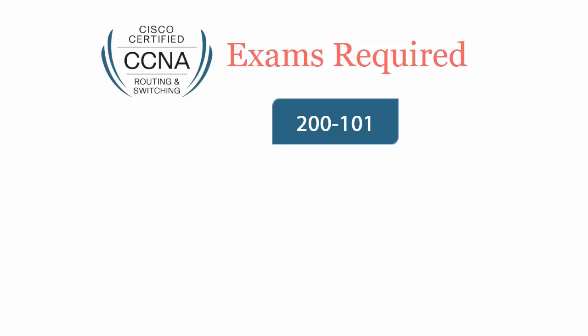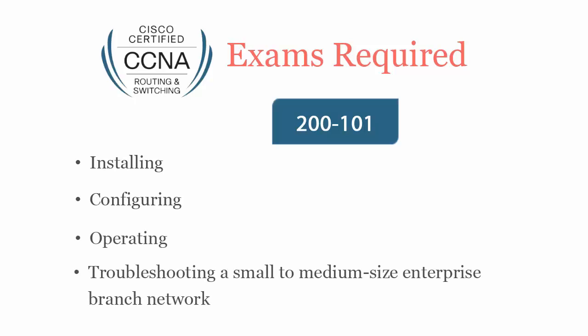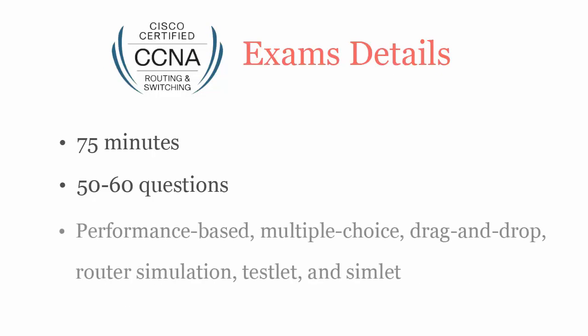Cisco ICND2-200101 exam covers installing, configuring, operating, and troubleshooting a small to medium-sized enterprise branch network. In 75 minutes, you have to complete 50-60 performance-based multiple-choice, drag-and-drop, router simulation, test-let, and sim-let questions.